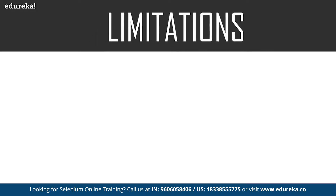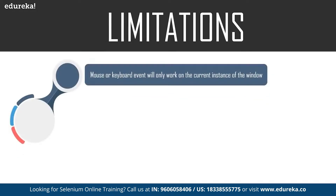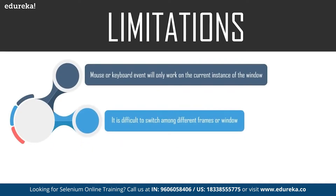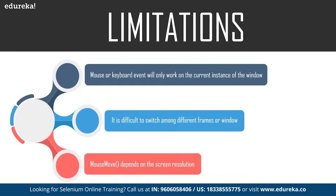Now let's take a look at the limitations of this Robot class. The mouse or keyboard event will work only on the current window, and it is difficult to switch among different screens or windows. If the code execution moves to a new window, the mouse or keyboard event will still remain on the previous window. The mouseMove method depends on screen resolution, so XY coordinates will behave differently on different screens. Also, if you're running tests in a virtual machine, script failure is more likely.